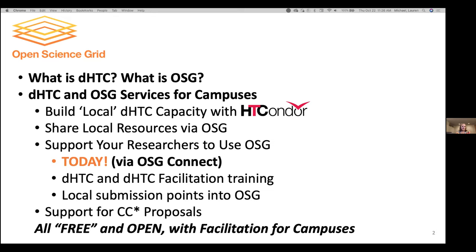We'll talk about how you can build local DHTC capacity on computing systems that you can manage with the Condor software, which is a scheduling system that your users would interact with like other scheduling systems. Greg will talk about why HT Condor is wonderful and really specialized for high-throughput computing, and how that makes a difference for what we do in OSG and what you as a campus can do to bring your researchers to OSG.